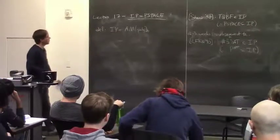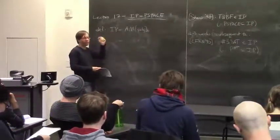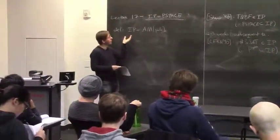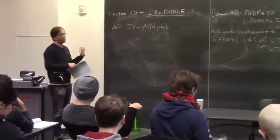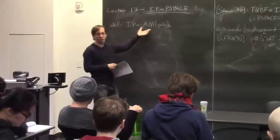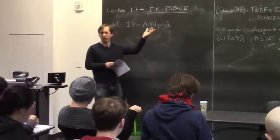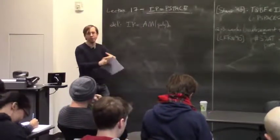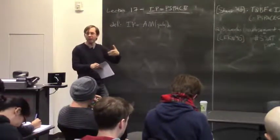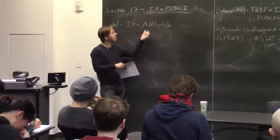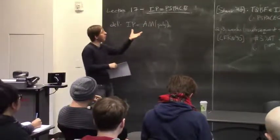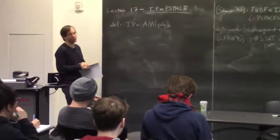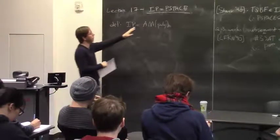To remind you, the class IP was originally invented for cryptographic reasons, but it's the class of all languages that have interactive proofs. In the terminology we've already used, we can think of this as Arthur-Merlin interactive proofs, but where you allow polynomially many rounds. We first studied Arthur-Merlin interactive proofs with a fixed number of rounds K, and showed that whenever you have a fixed number of rounds K, it's equivalent to just having two rounds—the class called AM. But if you allow polynomially many rounds, this class IP, you actually end up getting something much bigger: PSPACE.